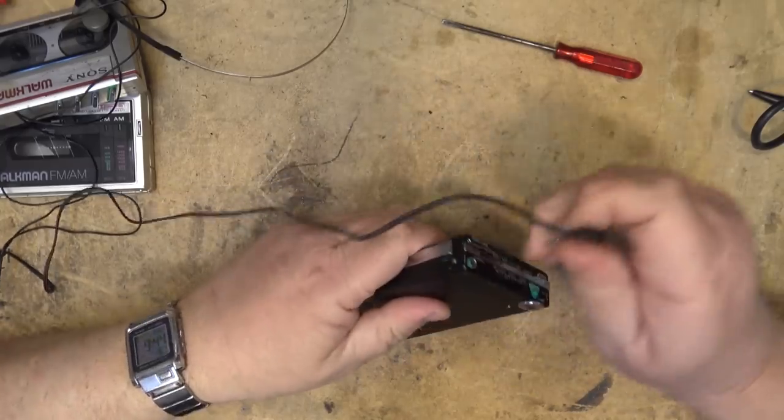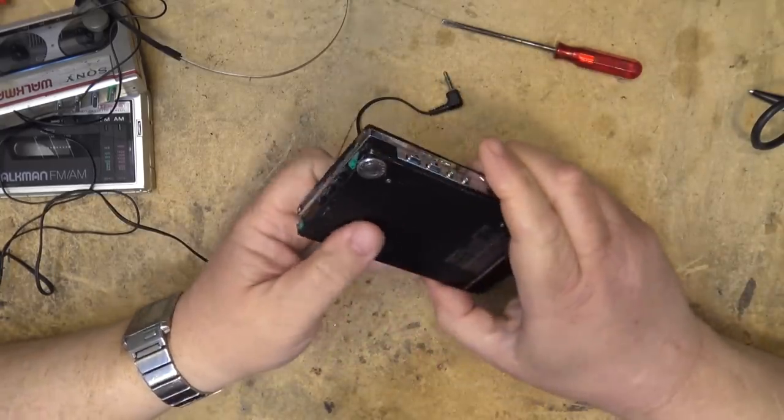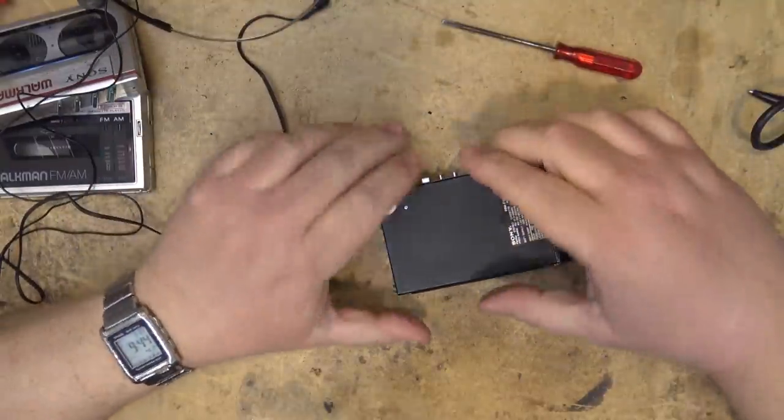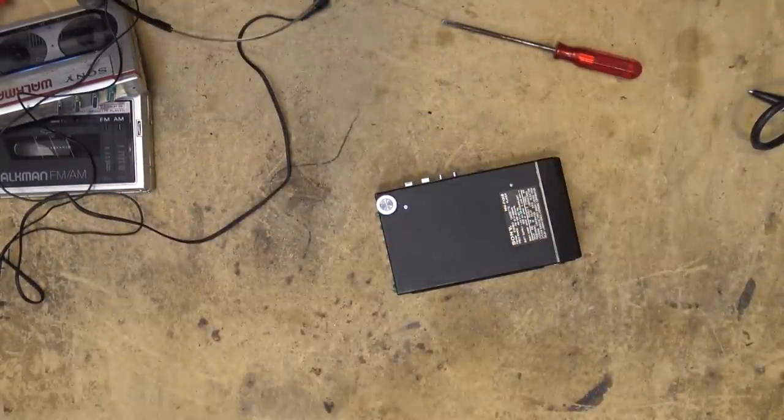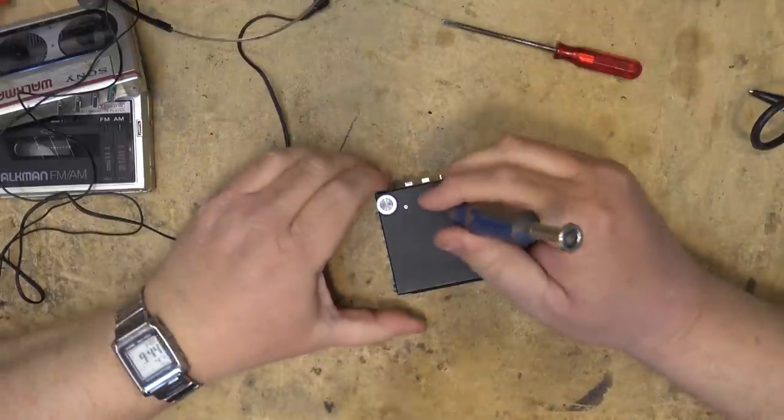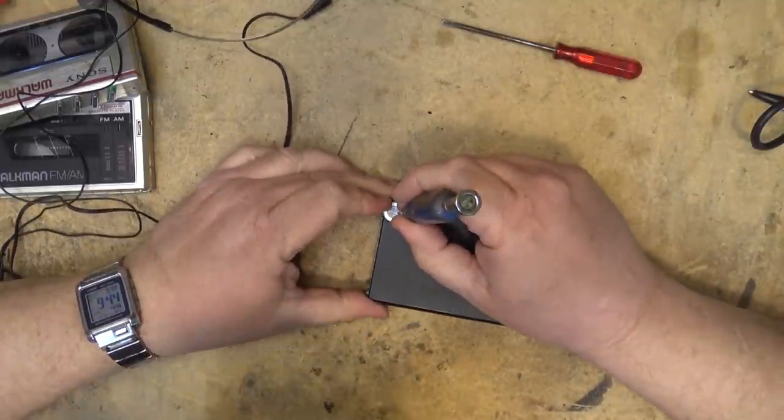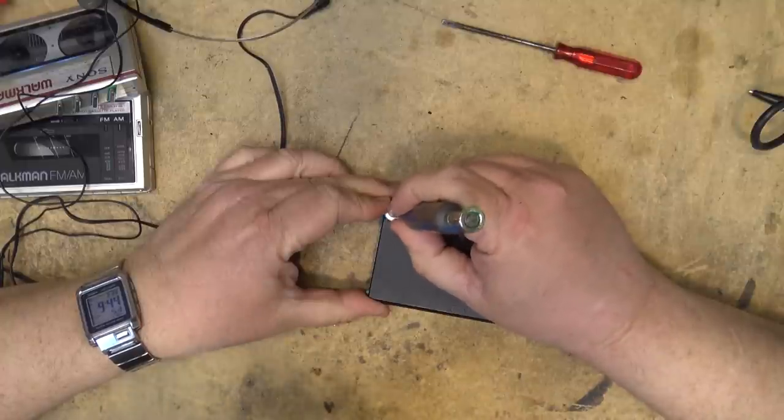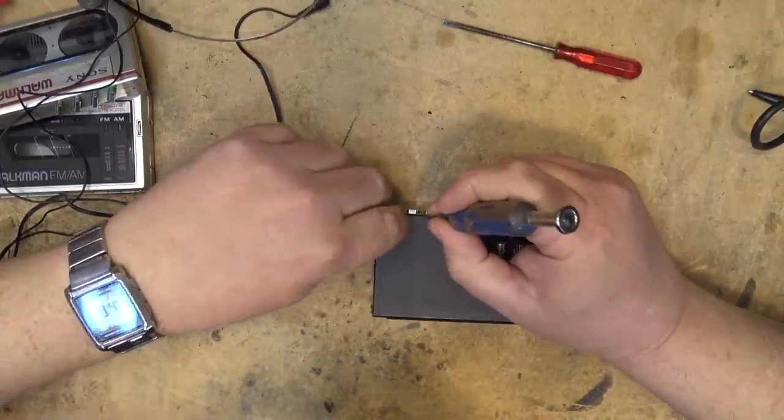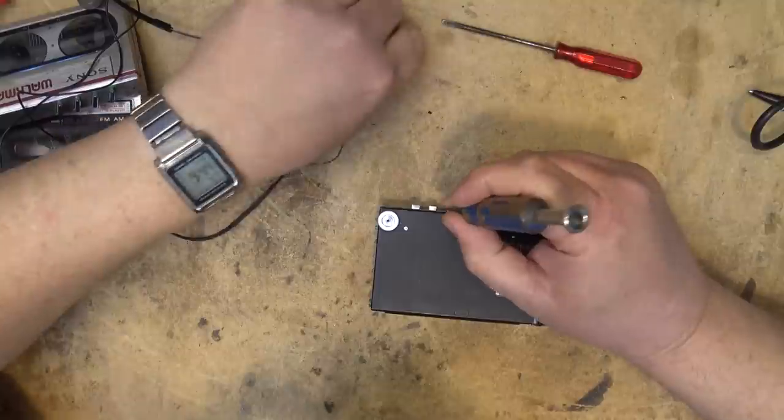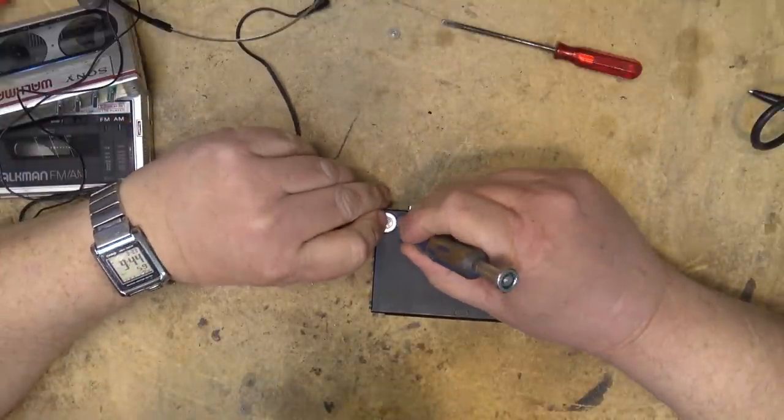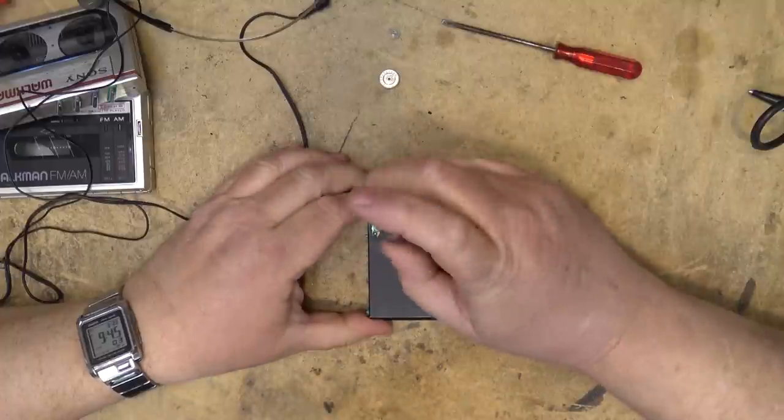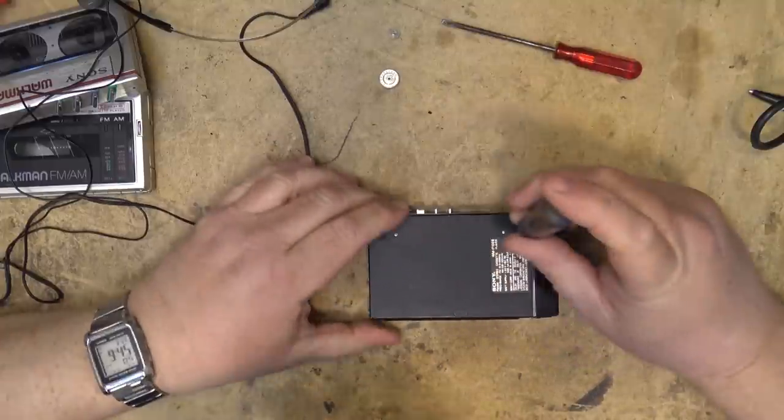I wonder if we can take the back off this beast and just take a look inside. So, to open these things up, you need to use your special tools. You unscrew the knob. That has to come off first. Then you lift off the volume knob. Then you remove the screws from the back.